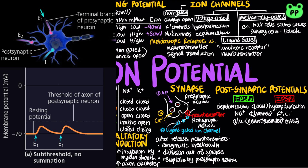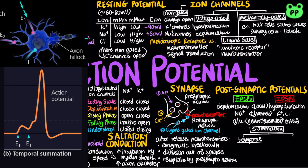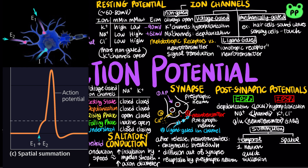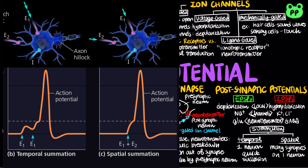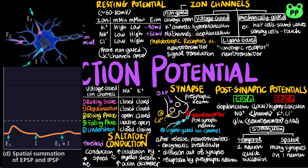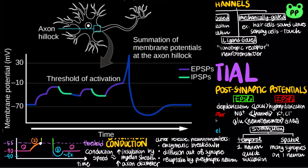Unlike action potentials, postsynaptic potentials are graded and do not regenerate. A single EPSP is usually too small to trigger an action potential in a postsynaptic neuron. Temporal summation occurs when two EPSPs are produced in rapid succession by a single neuron, whereas spatial summation occurs when EPSPs are produced nearly simultaneously by different synapses on the same postsynaptic neuron. The combination of EPSPs through spatial and temporal summation can trigger an action potential. Through summation, an IPSP can counter the effect of an EPSP. The summed effect of EPSPs and IPSPs determines whether an axon hillock will reach threshold and generate an action potential.